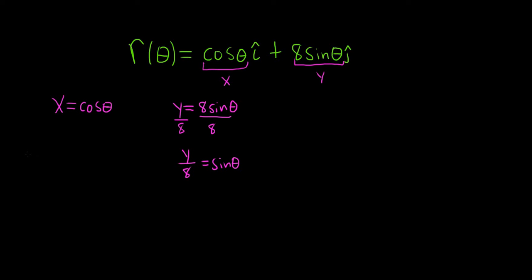So now what we do is we use the identity that says sine squared theta plus cosine squared theta is equal to 1. So sine squared will just be this y over 8 squared. So when you square the y, you're just going to get y squared. And then when you square the 8, you're going to get 64. Plus cosine squared, well, that's just going to be x squared. And what we're going to do is we're going to write it over 1. And you'll see why in a minute, and this is equal to 1.